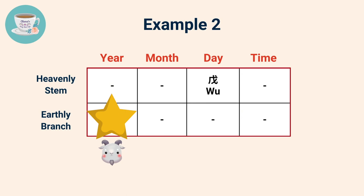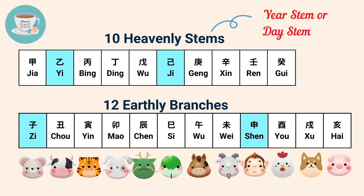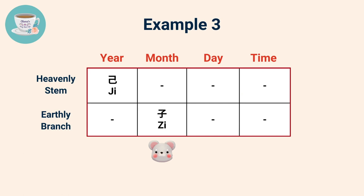If your year stem or day stem is either Yi or Ji, then the compatible earthly branches are Zi and Shen. In this example, the year branch is Ji, and Zi can be found in the earthly branch. Zi represents the rat, so your Nobleman star is the person born in the year of the rat.